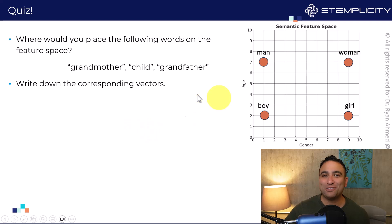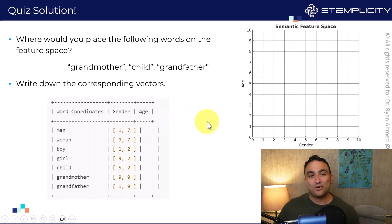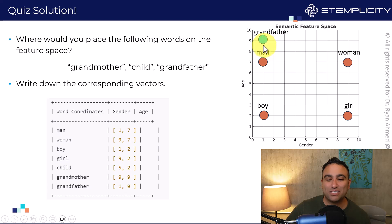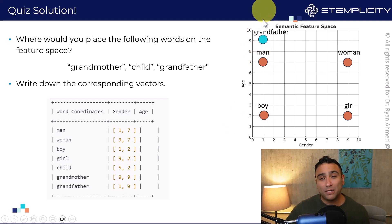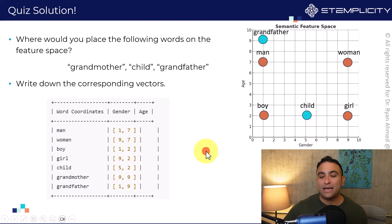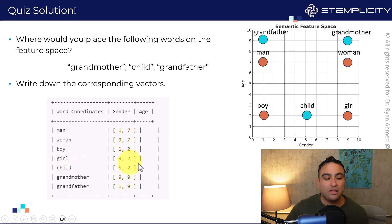I hope you were able to solve the quiz. So here are the answers: 'grandfather' is going to be represented somewhere higher on the age axis than 'man', and of course higher than 'boy', but on the same gender axis. 'Child' — since I did not specify whether it's a boy or a girl — is going to be somewhere in between on the gender axis. 'Grandmother' will be higher in age than a woman. The vector representations are: child = five and two, grandmother = nine and nine, grandfather = one and nine.